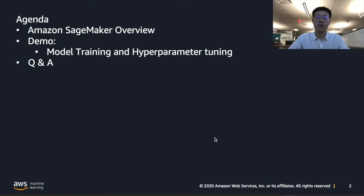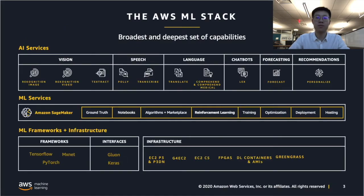We will work through an overview of Amazon SageMaker at a high level, and then we will spend some time working through a demonstration where we will show how to use Amazon SageMaker to build, train, and deploy your own machine learning model, and then we will end with a little bit of Q&A.